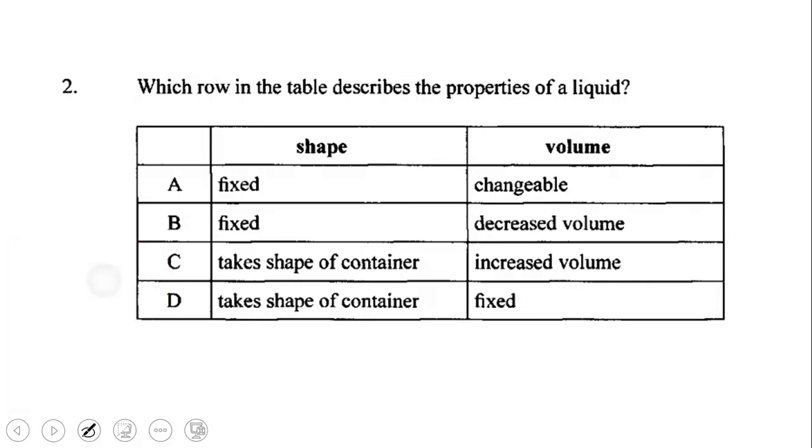Is it A, fixed shape and changeable volume? The answer is no. Is it B, fixed shape and decreased volume? The answer is no. Is it C, takes shape of container and increased volume? The answer is no. Is it D, takes shape of container and fixed volume? The answer is yes. So the correct answer for number two is D.